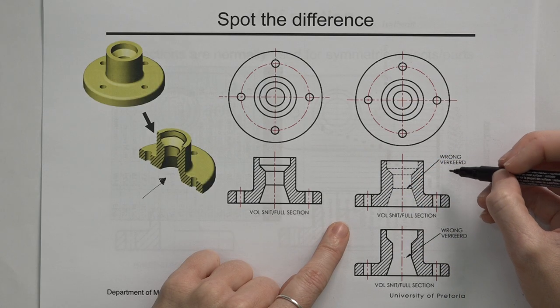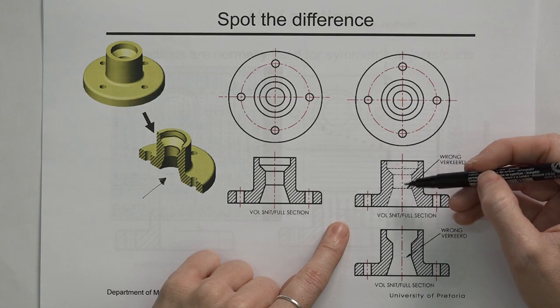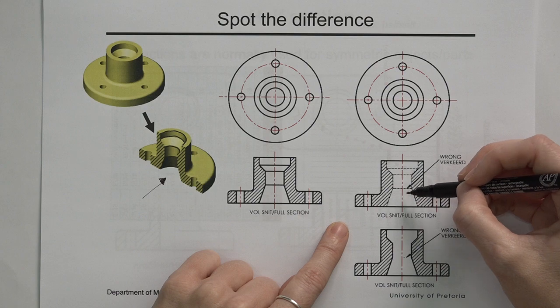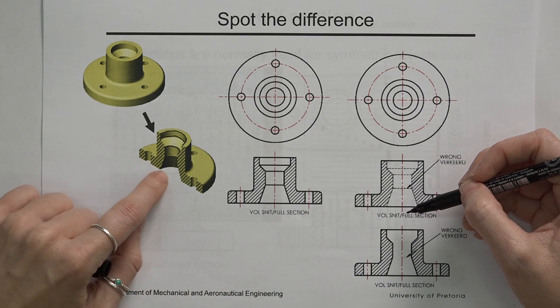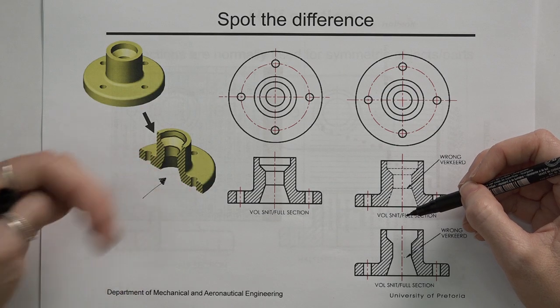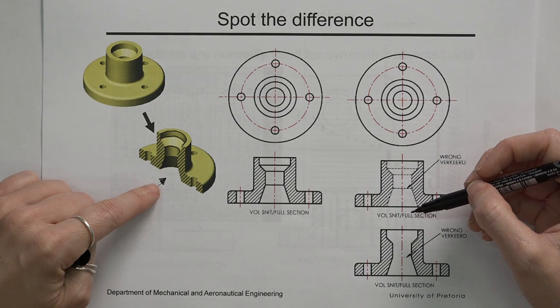This will not be correct. So if I have a situation where I've cut through the half, you won't show the information on the inside as hidden because it's not hidden anymore. The front part is literally taken away. So that is truly what I'm seeing.